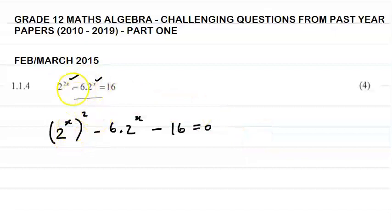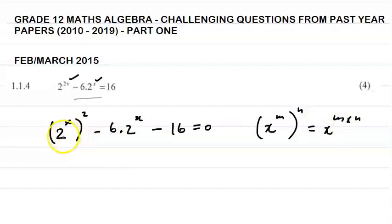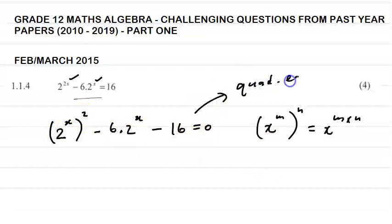Remember that 2 to the x all squared equals 2 to the 2x, using our laws of exponents: x to the m, raised to the power n, equals x to the m times n. If you look at this, you'll also recognize that 2 to the x all squared, minus 6 times 2 to the x, minus 16 equals 0 — this is now in the form of a quadratic equation: ax squared plus bx plus c equals 0.